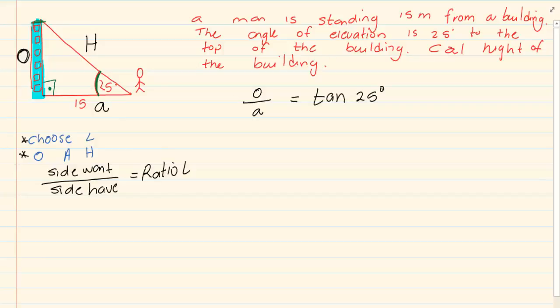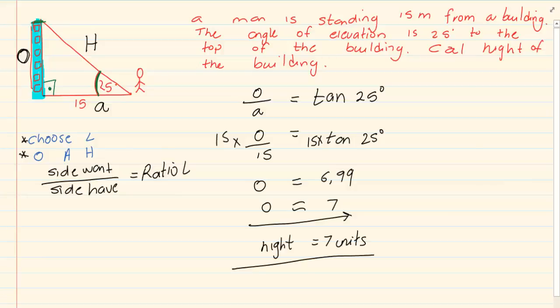Then I'm going to substitute what I have. I don't have O. I have that A is 15. Multiply by 15. Multiply by 15. Press it into your calculator, and you would have had that O is equal to 6.99. If you round it off, O is equal to 7. So the height of the building is equal to 7 units.